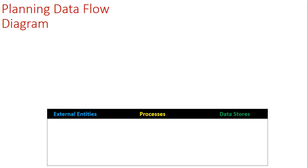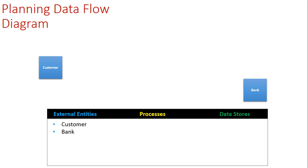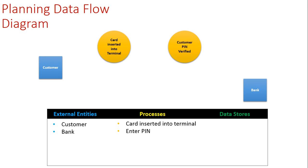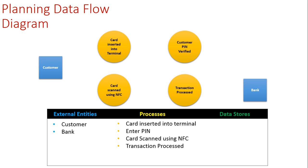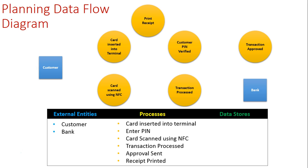Now let's start putting it together. We'll begin with our external entities — we've got our customer and we've got our bank. I've spread these two apart because they can both be accessing the system at different times. Next, we're putting on our processes: inserting the card into the terminal, entering a PIN, using NFC as an option, the transaction gets processed, approval is sent, and a receipt is printed.